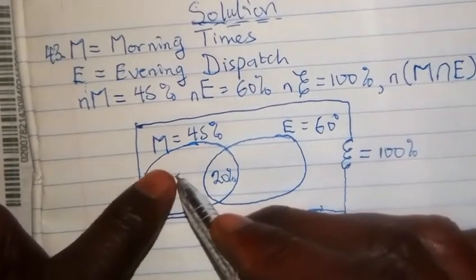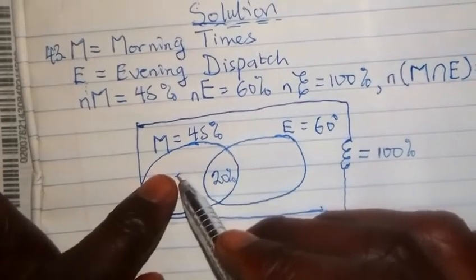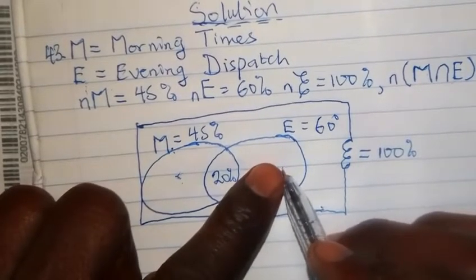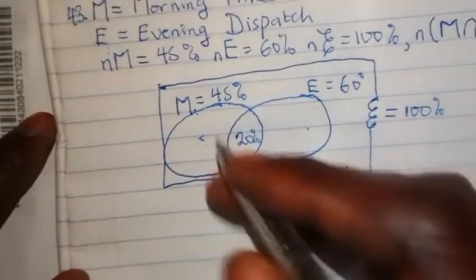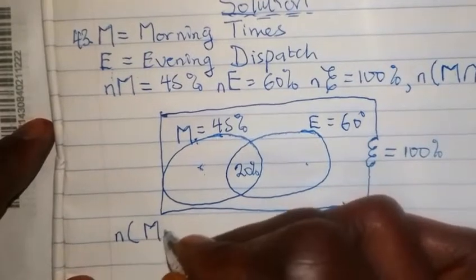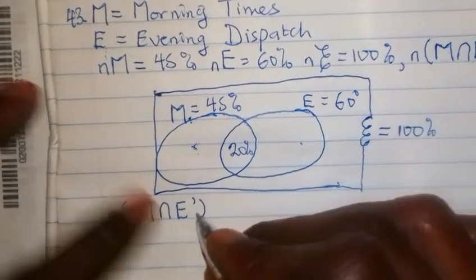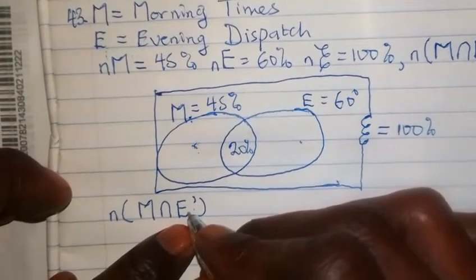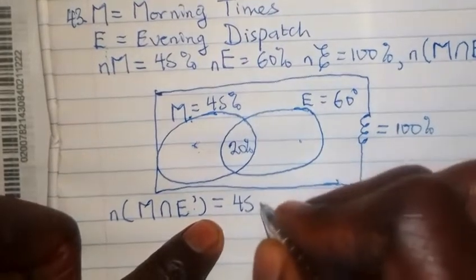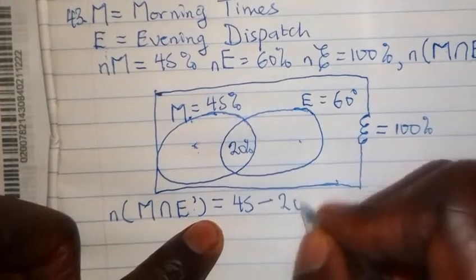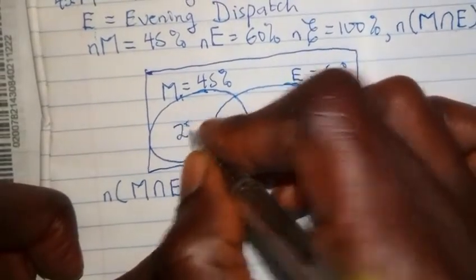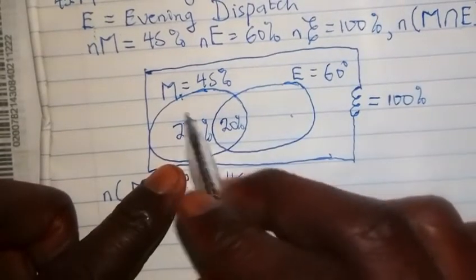You will notice there are regions without values yet. The left region represents households that read only Morning Times, written as M ∩ E'. The prime means the household did not read the Evening Dispatch. To get this value, we take the total 45 percent for M minus the 20 percent for the intersection, giving us 25 percent.